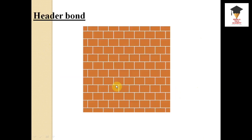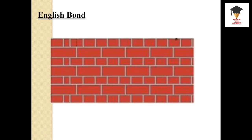Next is header bond. In header bond, the 9x9 cm square face of the brick is exposed on the wall face. Such bonds are called header bond. Next is English bond, a very important bond used in construction works. In English bond, alternate courses are arranged with stretchers and headers - one course headers and the next course stretchers.